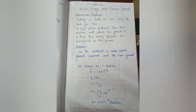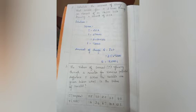Second question: calculate the amount of charge that would flow in 2 hours through an element of an electric bulb drawing a current of 2.5 ampere.